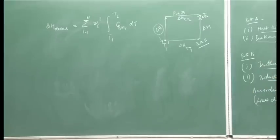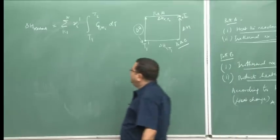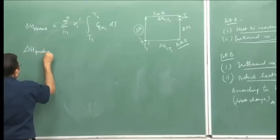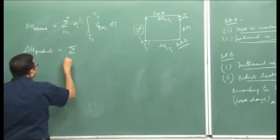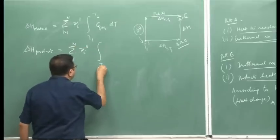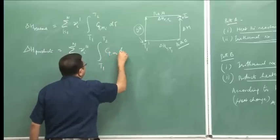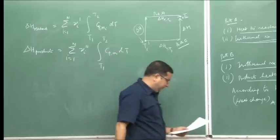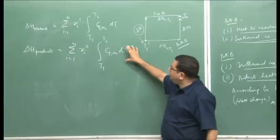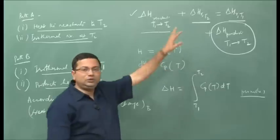Similarly, the change in enthalpy of the products is: ΔH_products = Σ(i=1 to n) ν_i″ · ∫[T1 to T2] C_p,mi dT, which gives the total change in enthalpy of the products when heating them from temperature T1 to T2.